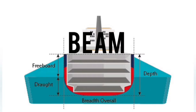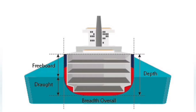Beam: It is the width of the hull measured from starboard to port side at its widest point. In other words, it is the distance measured from starboard to port side amidships.